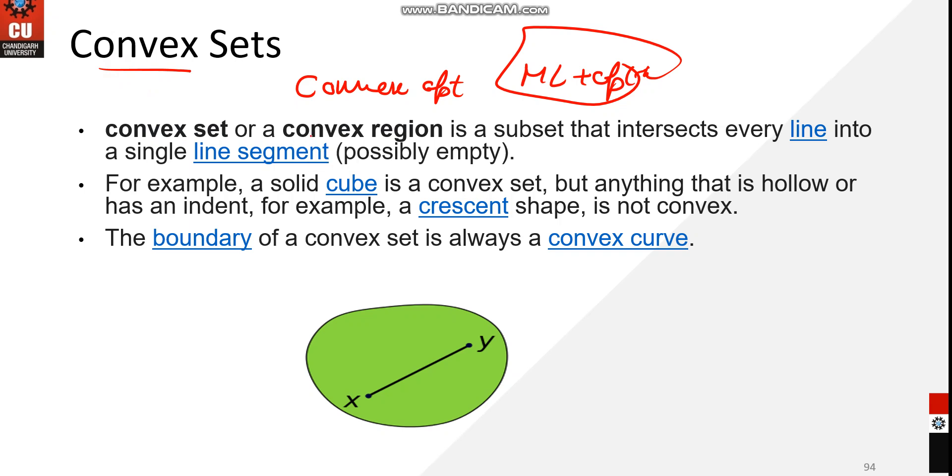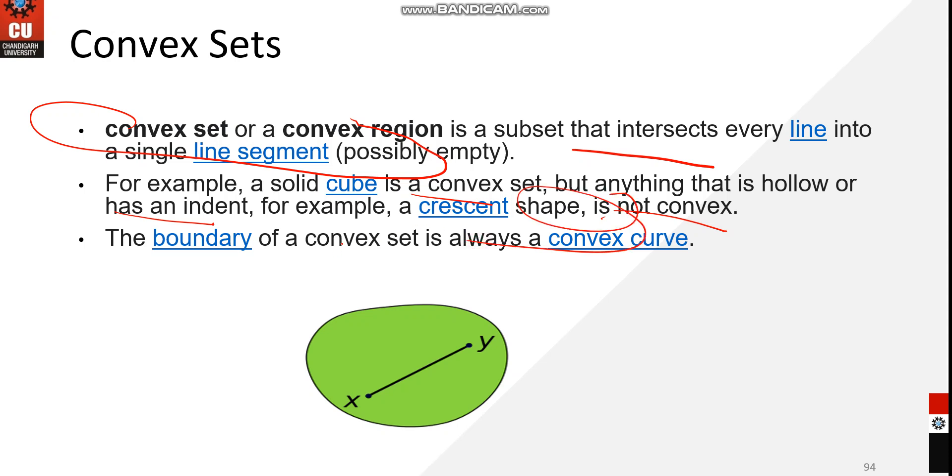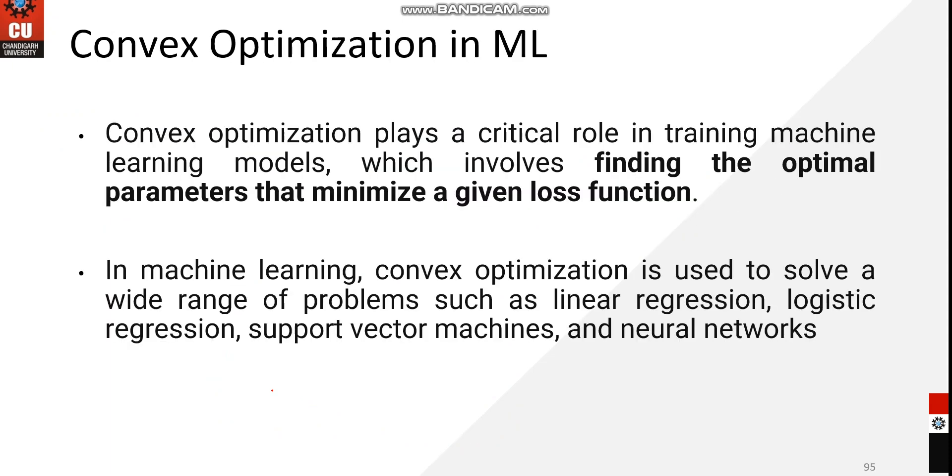A convex set or convex region is a subset that intersects every line into a single line segment, possibly empty. For example, a solid cube is a convex set, but anything that is hollow or has an indentation is not convex. The boundary of a convex set is always a convex curve. You can see in this diagram a convex set in which two points are being joined by a line, x and y.